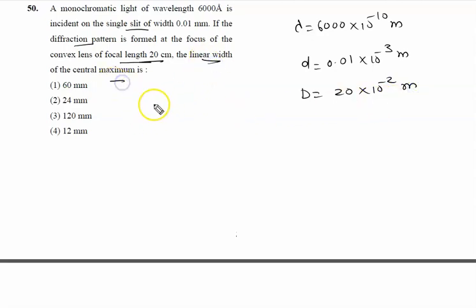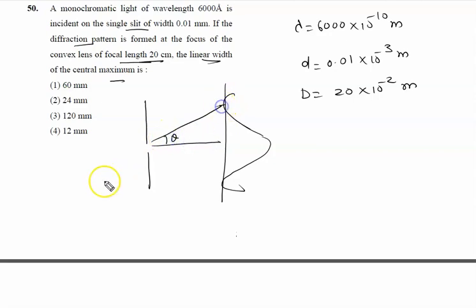The linear width of the central maxima: this is a single slit, this is screen, and this is central maxima. We all know this angle theta, and for this you will write this is the first minima.